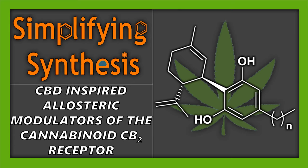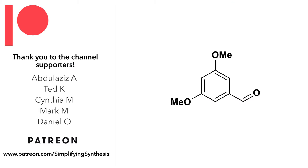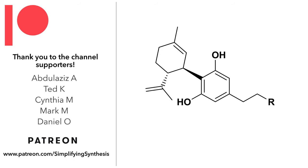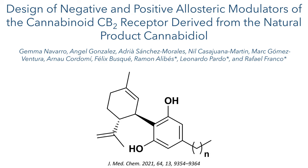Welcome back to Simplifying Synthesis, the channel where we look at complex organic chemistry and explain how it works. In this video we are going to look at CBD inspired allosteric modulators of the cannabinoid CB2 receptor. The work we will be looking at was published by the Franco, Pardo and Alibes groups from the Universitat Autonoma de Barcelona in Spain, in the Journal of Medicinal Chemistry.